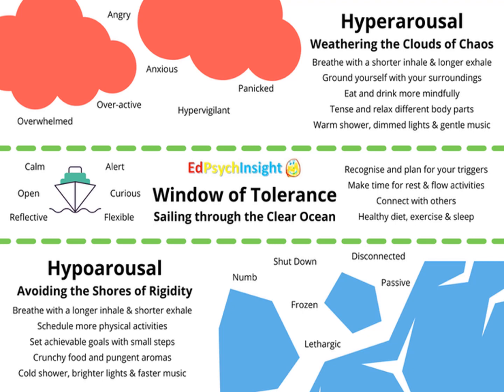Let's think again about hyperarousal — the clouds of chaos. Pookie Nightsmith has talked about how we don't want to shoot through the top or fall through the bottom of our window of tolerance. I'm going to liken this to a thunderstorm above the clear ocean — it's when we move into fight or flight mode. The following words apply to the cloud of chaos: angry, anxious, tense, panicked, hypervigilant, unfocused, overactive, impulsive, overwhelmed. Our hyperaroused state can be most easily noticed in our body as our heartbeat fastens, our breathing becomes shorter and we experience shakiness and aches and pains.